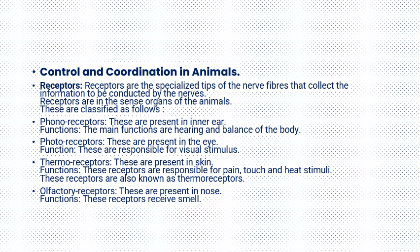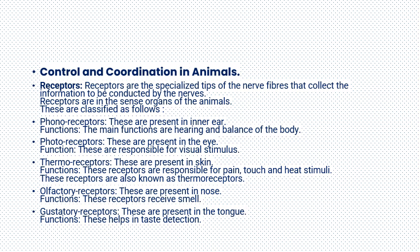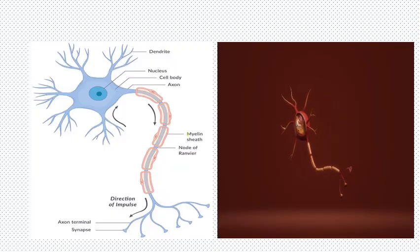Olfactory receptors are present in the nose and their function is to receive different smells. Gustatory receptors are present in the tongue and are helpful for taste detection — we taste different food substances such as sweet, sour, bitter, or spicy. These are the sensations mainly produced by the receptors present in our body.